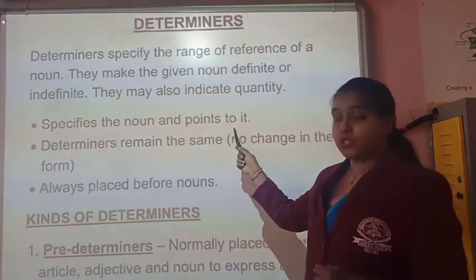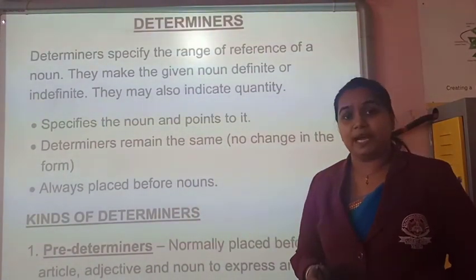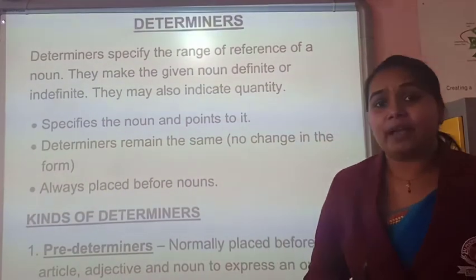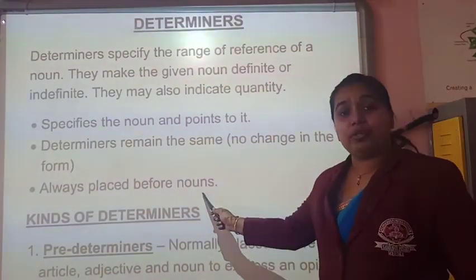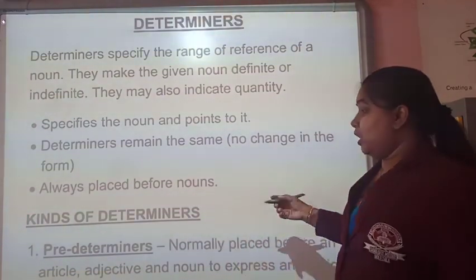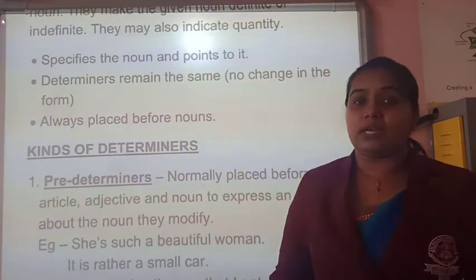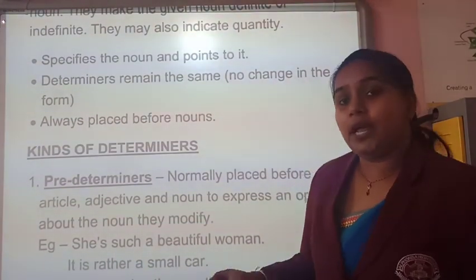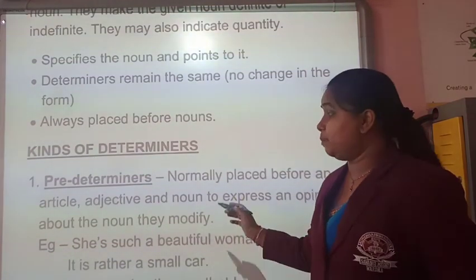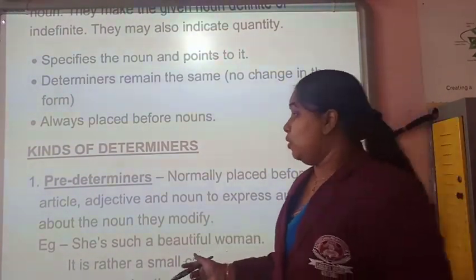Determiners specify the noun and point to it. They remain the same — that means there is no change of form. There is only one determiner to be used with one noun, and it is always placed before the noun. Now let us read about the kinds of determiners. We already started with articles. The first one we are going to discuss today is pre-determiners, which are normally placed before an adjective, noun, or article.